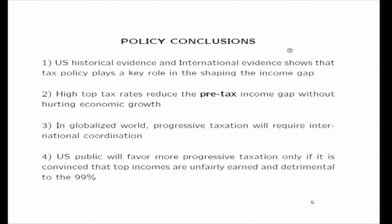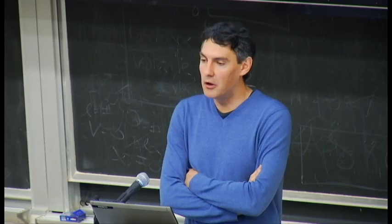To conclude, U.S. historical evidence and international evidence shows that tax policy plays a key role in shaping the income gap. High top tax rates reduce the pre-tax income gap without necessarily hurting economic growth — if anything, the evidence goes the other way. In the globalized world we are in today, successful progressive taxation will likely require international coordination, but a country as large as the United States could definitely play a central role. Ultimately, the U.S. public will favor more progressive taxation only if convinced that top incomes are unfairly earned, to the detriment of the 99%.